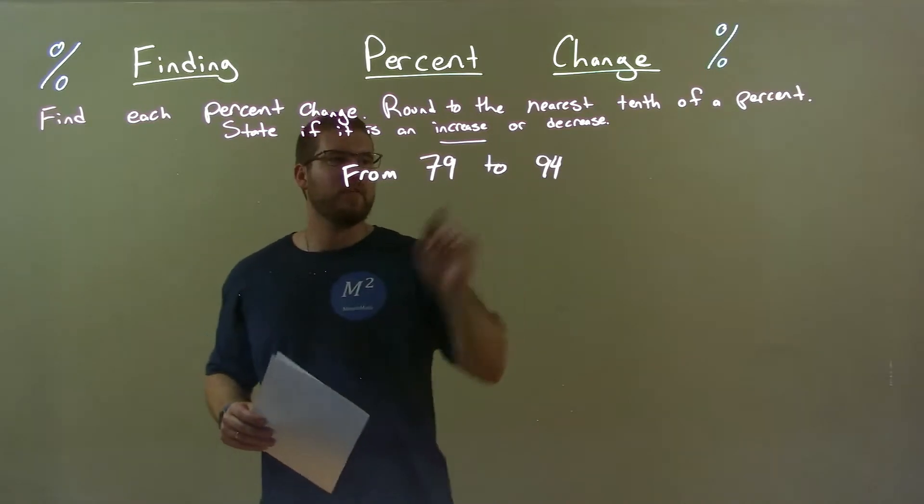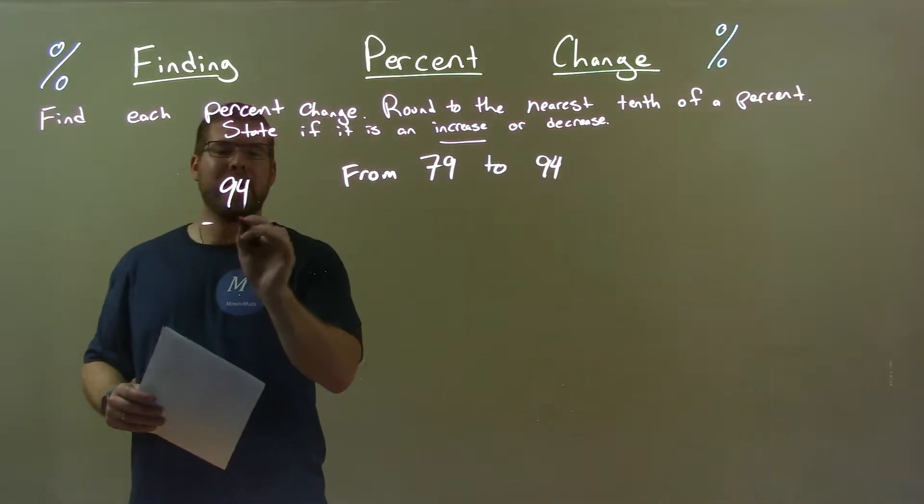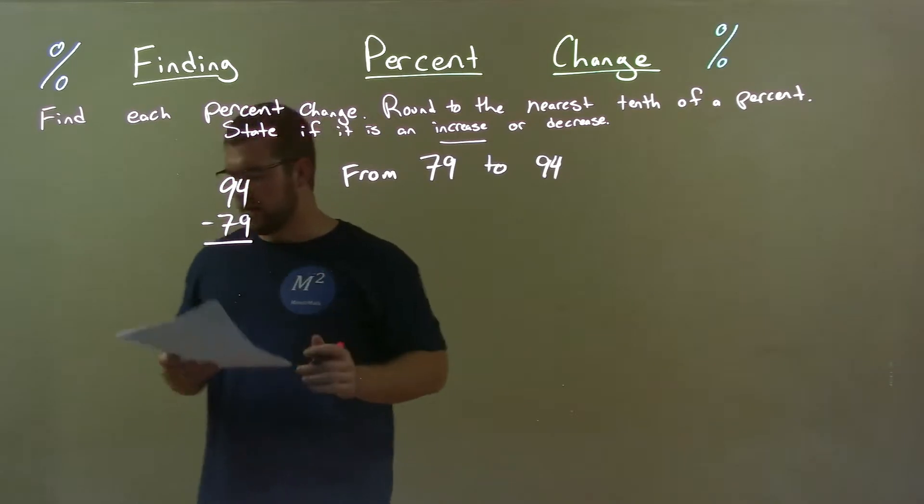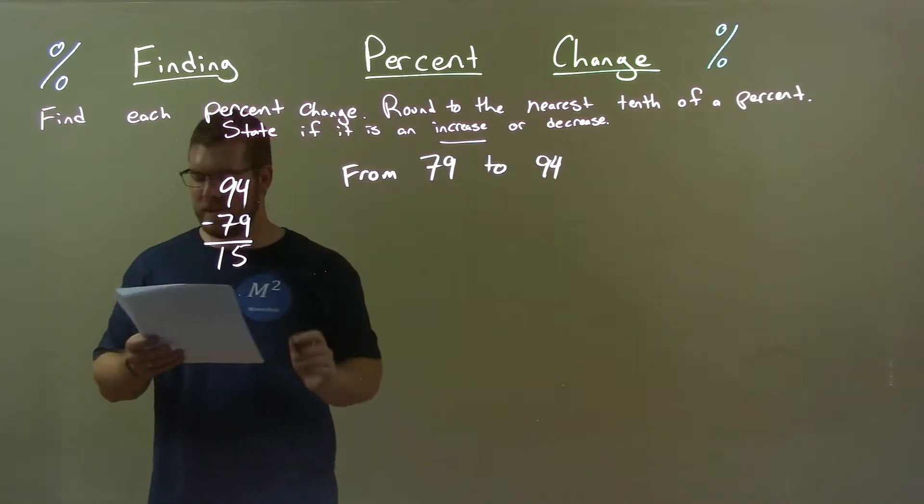Now, difference between the two numbers, 94 minus 79. Subtract the two and we get a 15 right there.